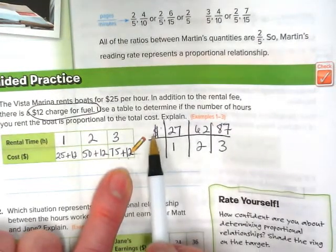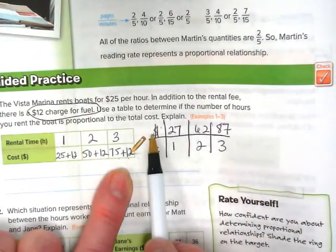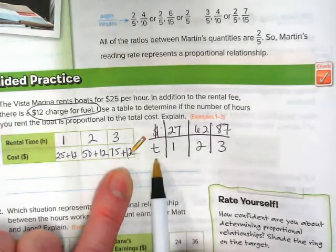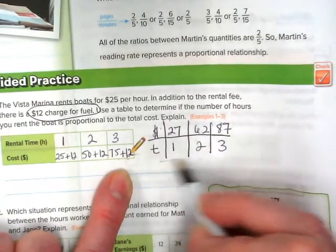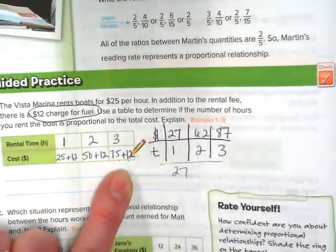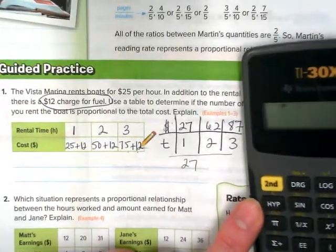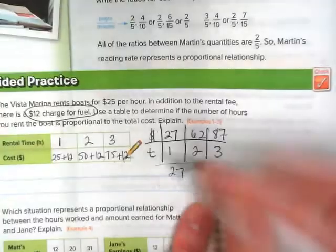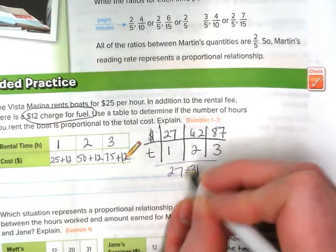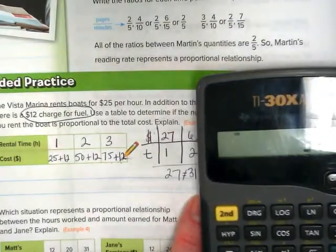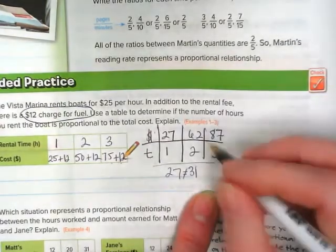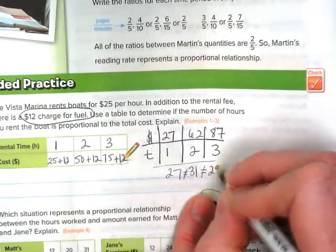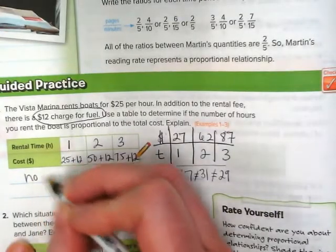Notice to check this, we're putting the money over time. And we're going to divide 27 by 1 is going to give us 27. 62 divided by 2 is going to give us 31, and those are not equal to each other. And 87 divided by 3 is 29, which is not equal to either of the others. So this is not proportional.